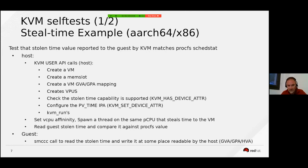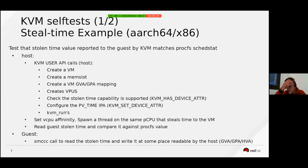Eventually the guest is run. What runs on the guest is very simple code that makes SMCC calls to read the stolen time value and write the read value at a location readable by the host — there is a mechanism to share variables between the host and the guest.